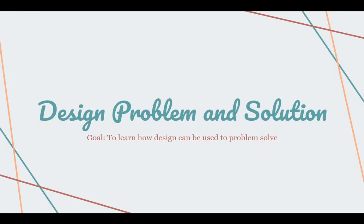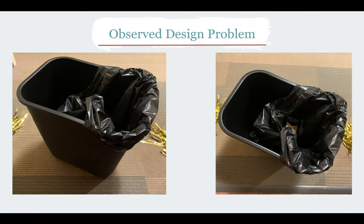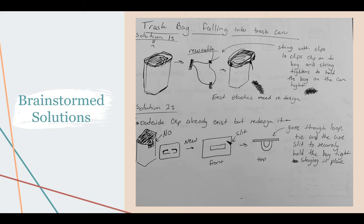Through my design problem and solution, I learned how design can be used to problem solve. The problem I observed was the issue of trash bags falling into the trash can. When this occurs, it can be unpleasant to stick your hands into a nasty trash can to place it back correctly on the edges. I created two solutions. The first was a string that goes around the bag on the outer edge of the trash can that can be tightened. The second was a redesign of an existing clip and hooks placed on the outside of the trash can where you could put the excess trash bag through a hole, tie it, and then wedge it between a slit.